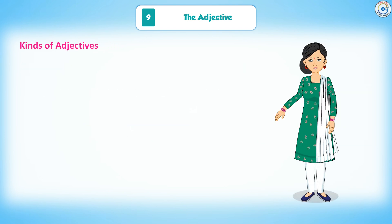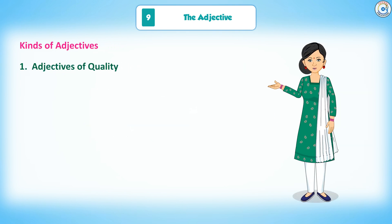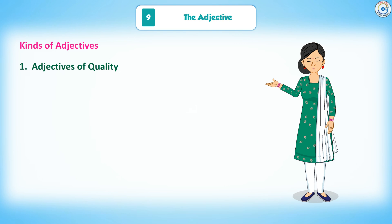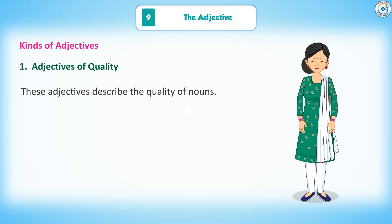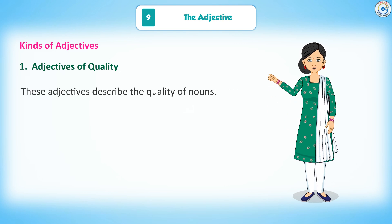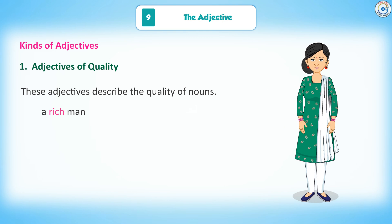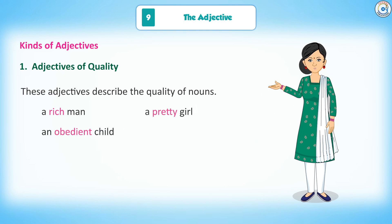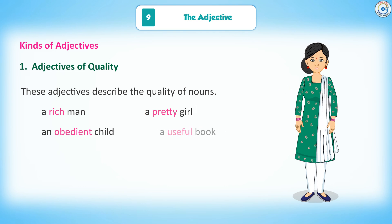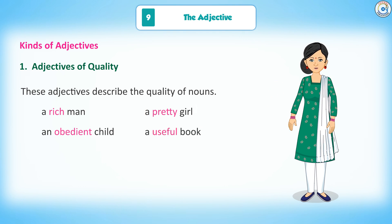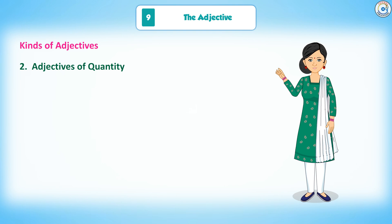Kinds of adjectives. 1. Adjectives of quality: These adjectives describe the quality of nouns. Examples: a rich man, a pretty girl, an obedient child, a useful book.